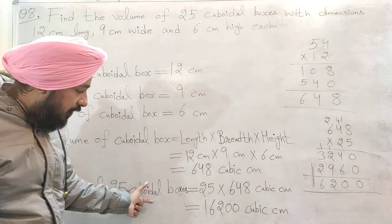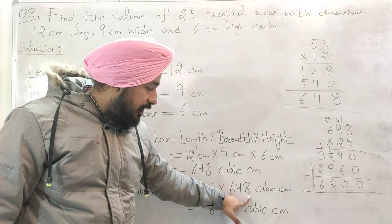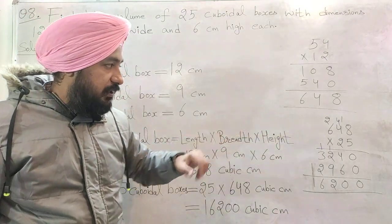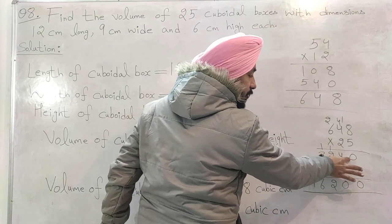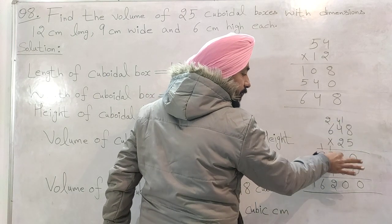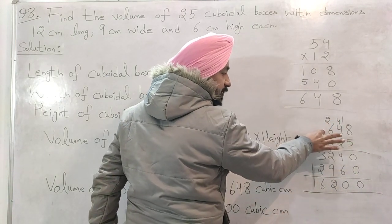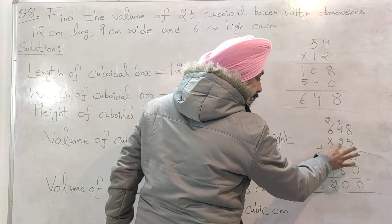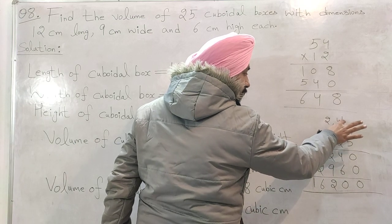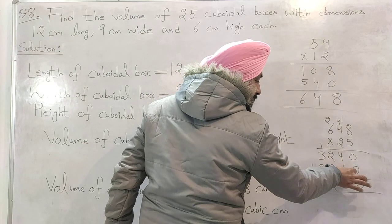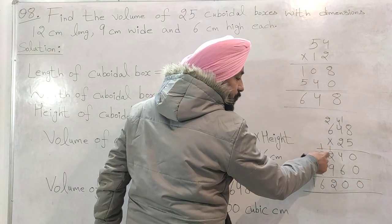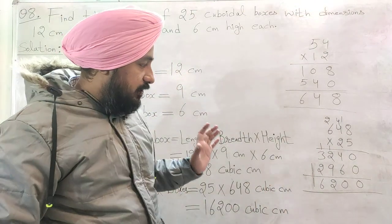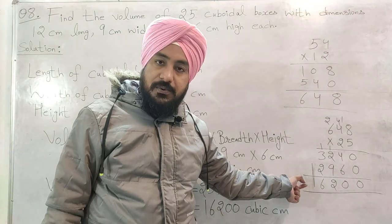Volume of 25 cuboidal boxes = 648 × 25. ਇਸ multiplication ਵਿੱਚ: 5 × 8 = 40, 0 ਥੱਲੇ 4 carry; 5 × 4 = 20 + 4 = 24, 4 ਥੱਲੇ 2 carry; 5 × 6 = 30 + 2 = 32. ਫਿਰ 2 × 8 = 16, 1 carry; 2 × 4 = 8 + 1 = 9; 2 × 6 = 12. ਜੋੜਨ ਤੇ: 0, 4+0=4, 8+6=14... answer 16,200 ਆਉਂਦਾ ਹੈ।